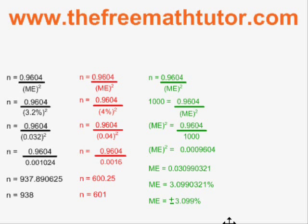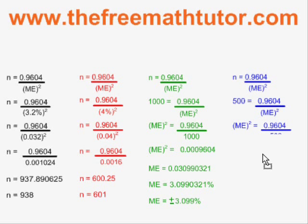Let's look at one more example where our sample size this time is 500. We plug it into the formula. We do the trade. We do our division. We square root both sides, and then we multiply by 100 to convert our value into percentage.